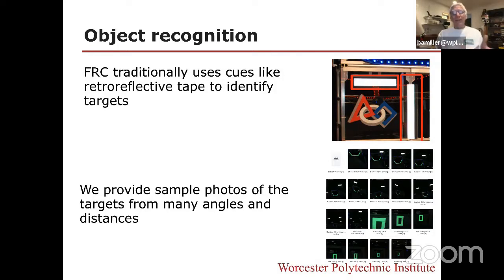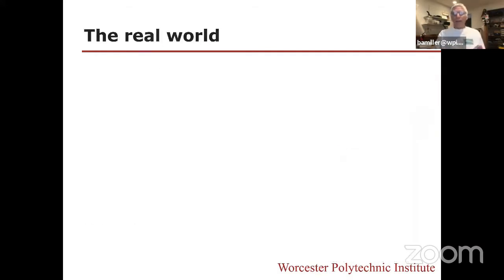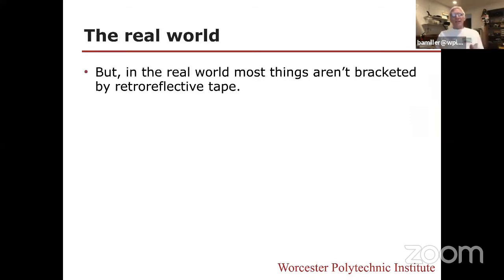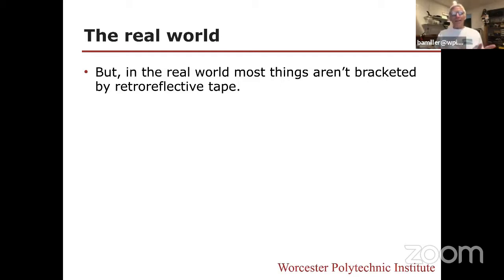As technology advances, processors get faster and prices go down. You start looking at the real world and what's really happening. In the real world, most things you want to detect don't have retroreflective tape around them — it's great on a robot field, but if you want to detect people or dogs or bicycles, you can't get them to wrap themselves in retroreflective tape. So it's kind of hard to use these techniques, and you'd like a solution that reflects what's going on in the real world.